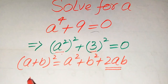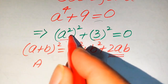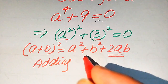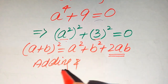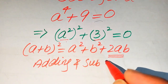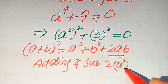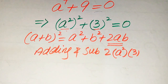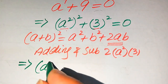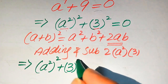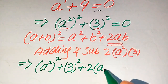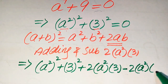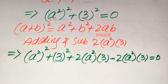In order to make this term, we need to add and subtract it, because our a is the base a² and our b is 3. So we add and subtract 2 times a² times 3 on both sides. After adding and subtracting, our equation is written as (a²)² + 3² + 2·a²·3 − 2·a²·3 = 0.